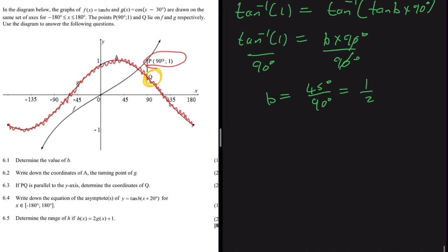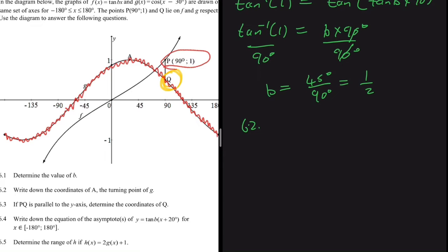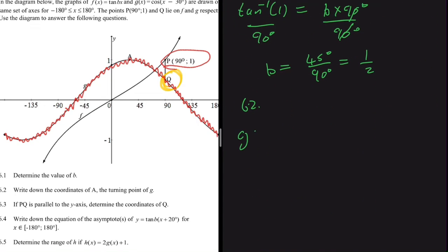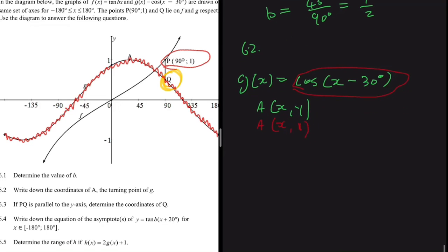Question 6.2 asks us to write down the coordinates of turning point A of g(x). The equation of g(x) = cos(x - 30°). We know the highest point a cosine graph can reach is 1, so the y-value of turning point A is 1. That gives us coordinates (x, 1), and we substitute into g(x) to find x.